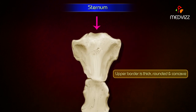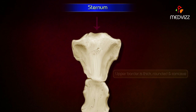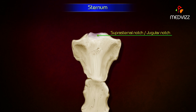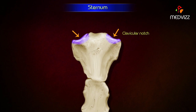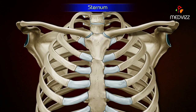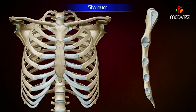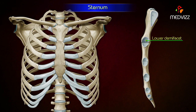The upper border is thick, rounded, and concave. It presents a notch called the suprasternal notch or jugular notch, and provides attachment to the interclavicular ligament. The clavicular notch on either side of the suprasternal notch articulates with the clavicle to form the sternoclavicular joint. The lateral border presents two articular facets: the upper facet articulates with the first costal cartilage to form a primary cartilaginous joint, and the lower demifacet along with the other demifacet in the body of the sternum articulates with the second costal cartilage.